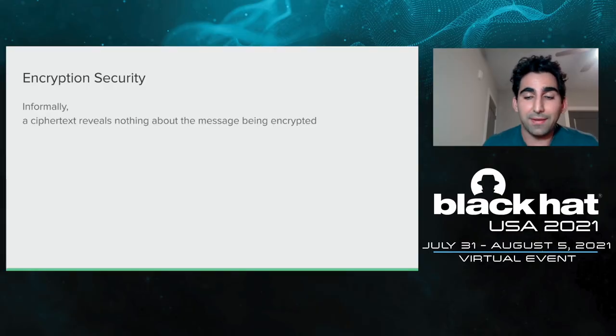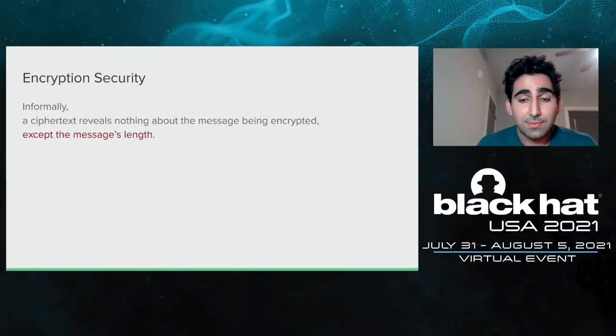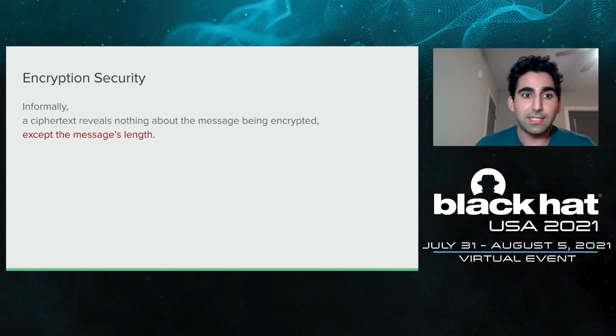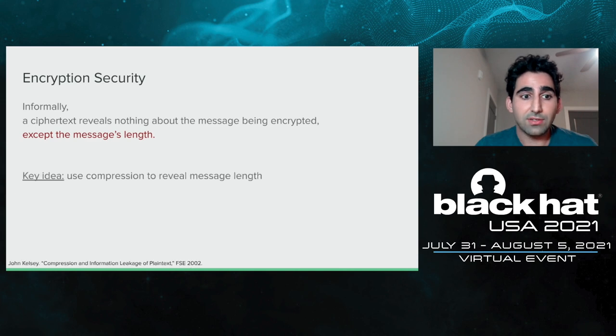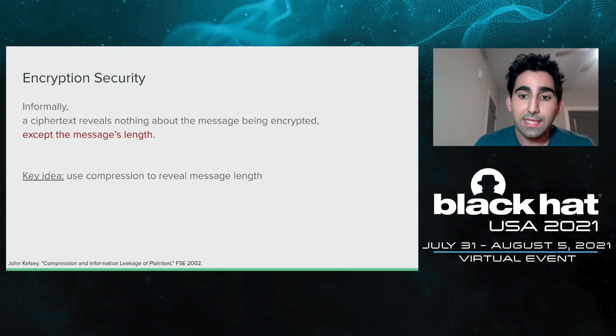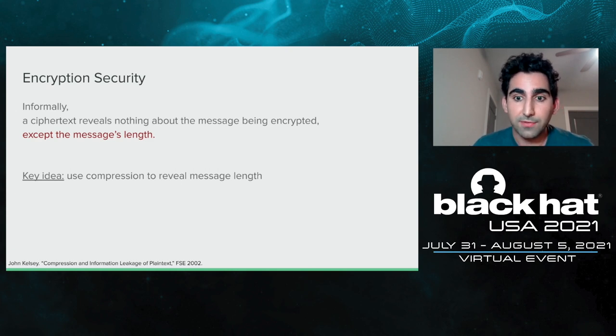Let's start out by talking about what we mean when we say an encryption scheme is secure. Informally, we're saying that a ciphertext reveals nothing about the message that's being encrypted except the message's length. And this 'except the message's length' is the piece that kind of allows compression side channel attacks to happen. The key idea is to use compression to reveal a message's length, and then by looking at length information, we're able to learn something about the message contents. That's where the compression side channel comes from.